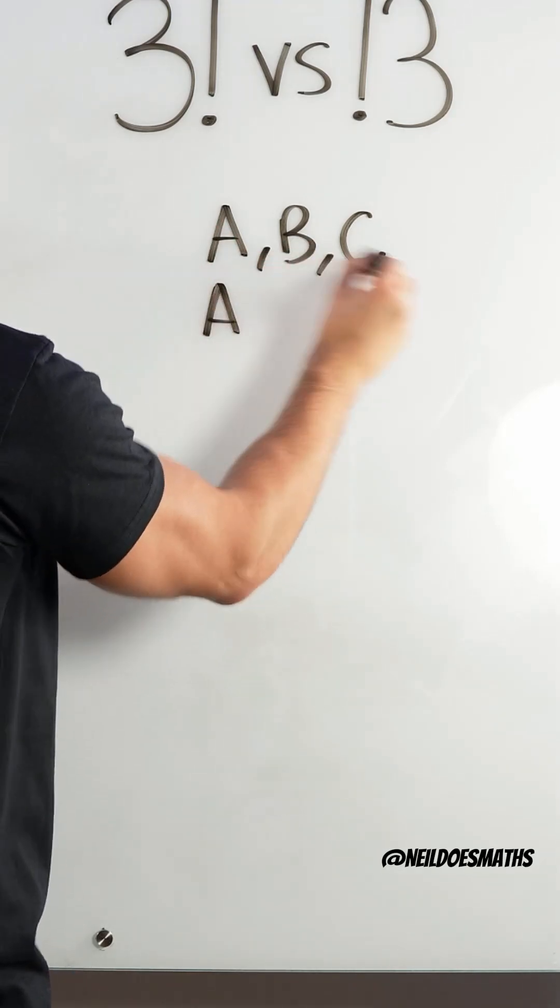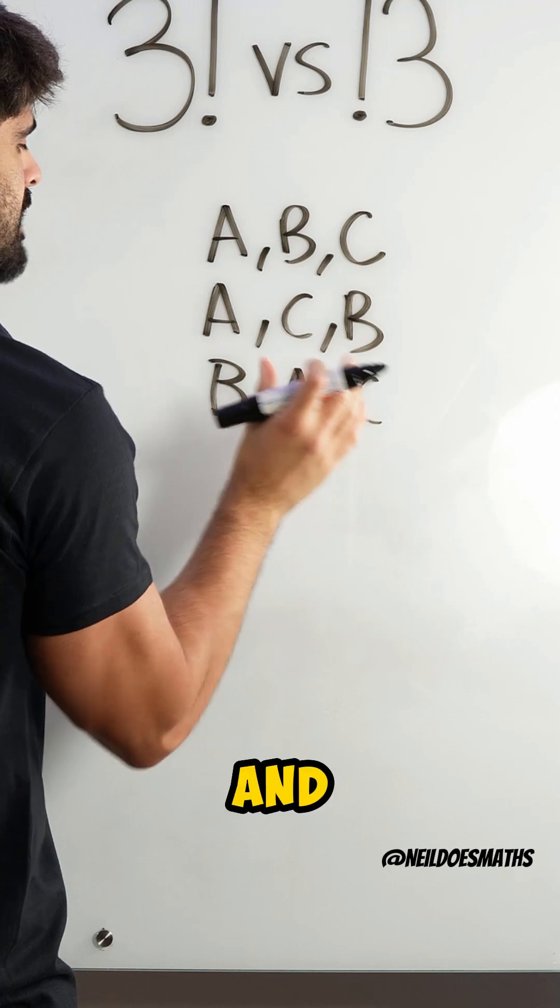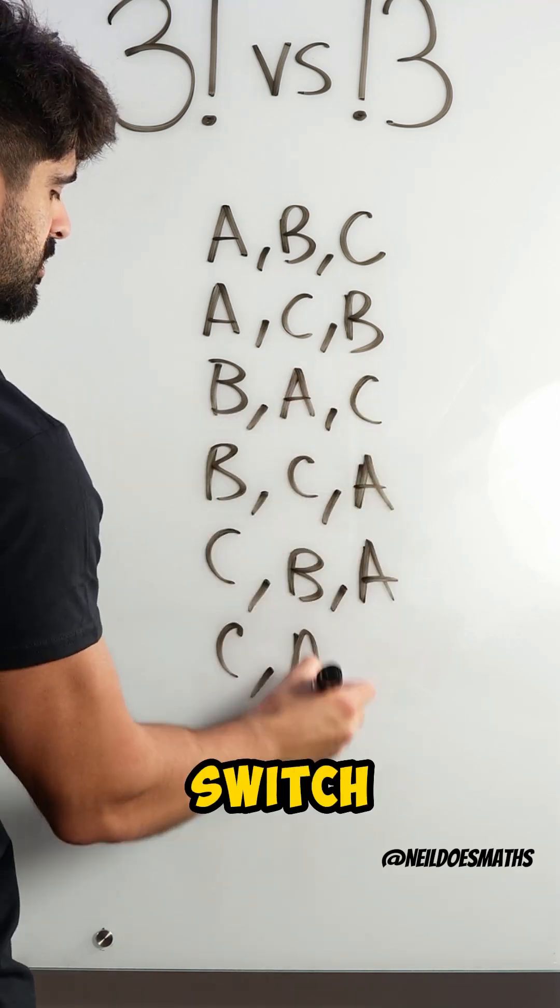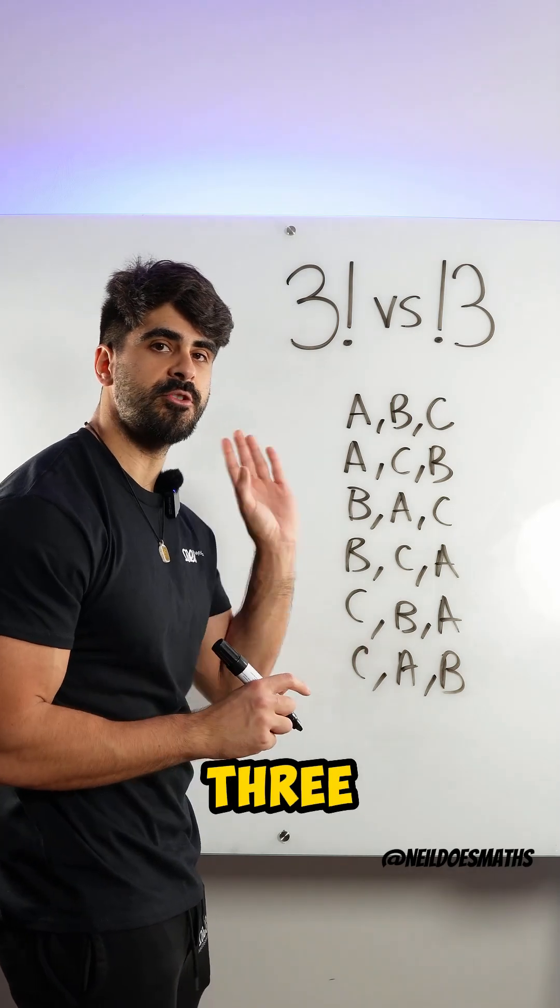Well, I can start with A, switch these two around. I could start with B and then have A, C, and then switch these two around. So, there are 6 different ways of arranging 3 unique objects.